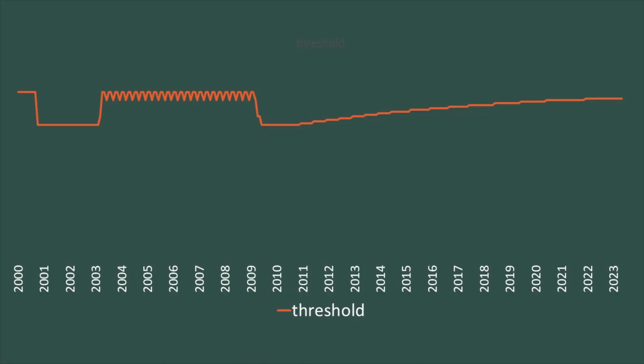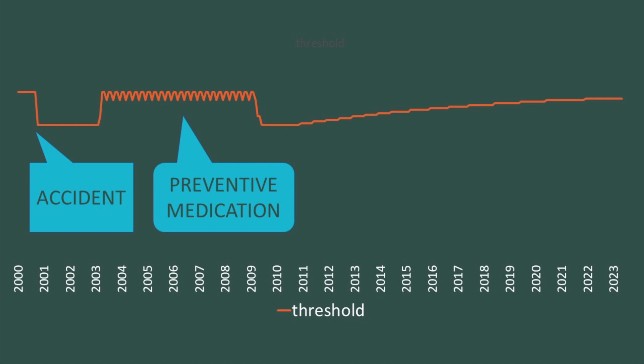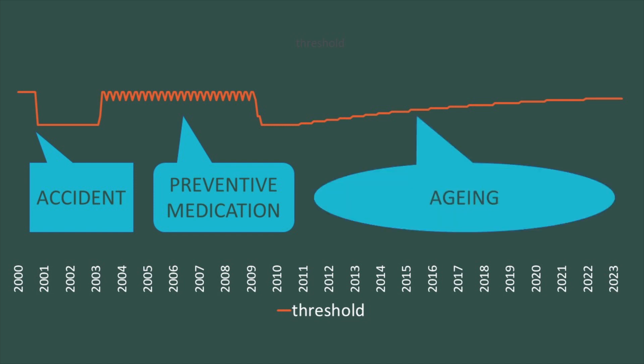Or they may be permanent. They may be sudden — for instance, in case of an accident — but they are not so frequent. Migraine threshold changes span a month when taking preventive medication, over years when aging, and events are usually even less frequent. On this example, there is a sharp drop following an accident 20 years ago, then a significant increase due to preventive medication from 2003 to 2009, and then the threshold slowly increases due to aging.